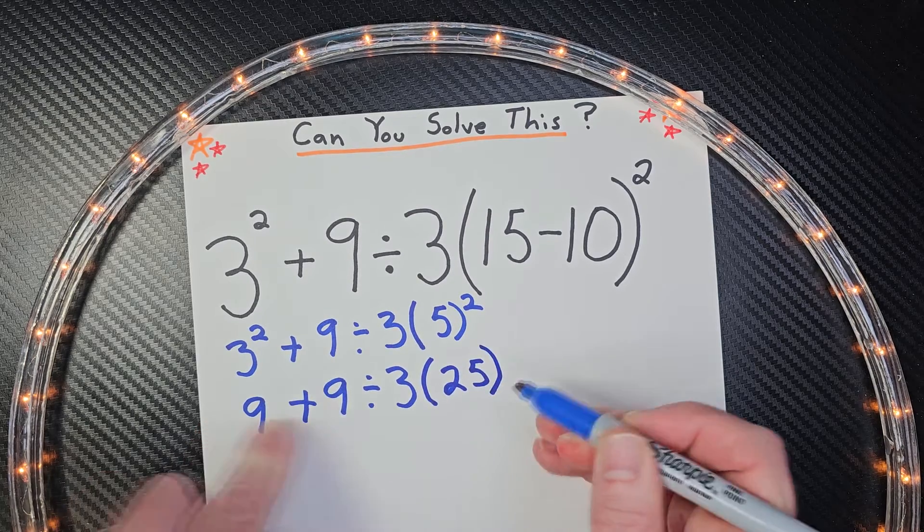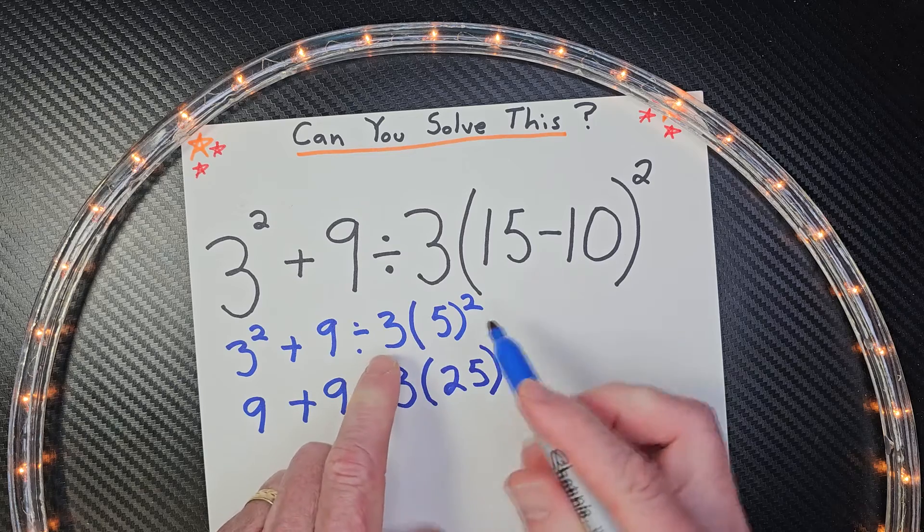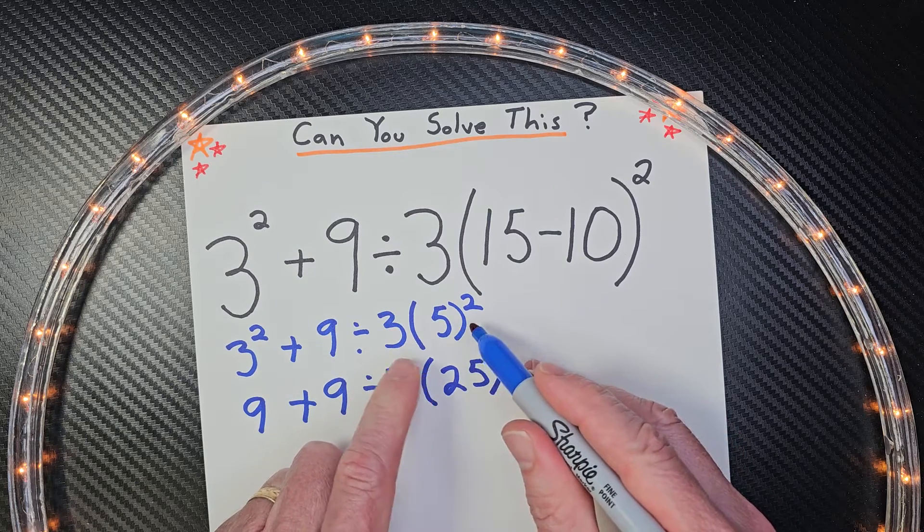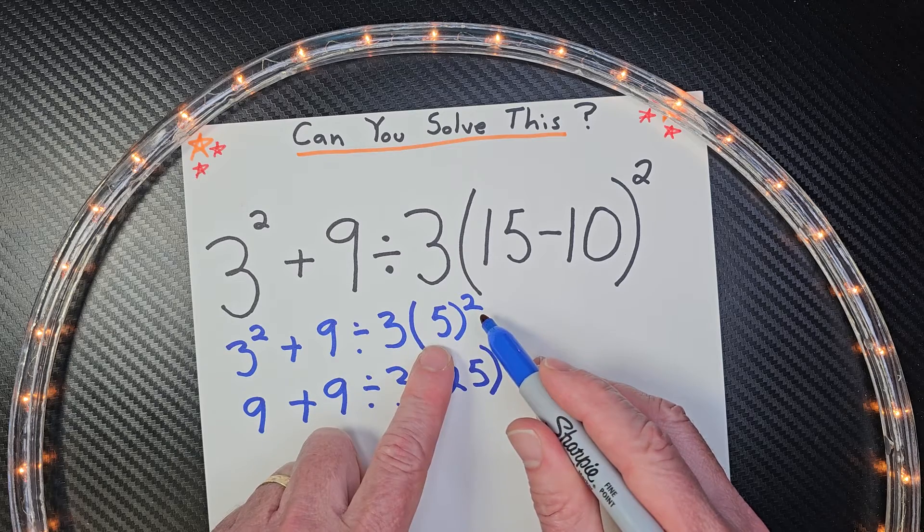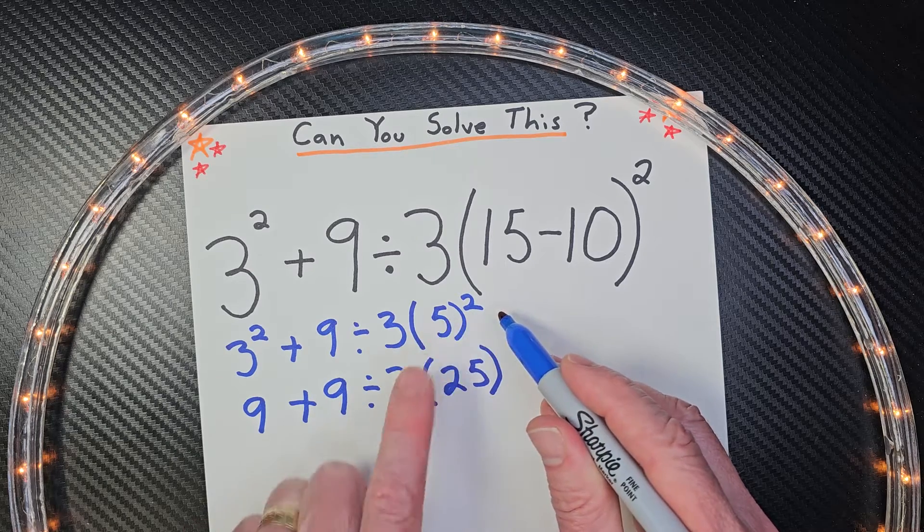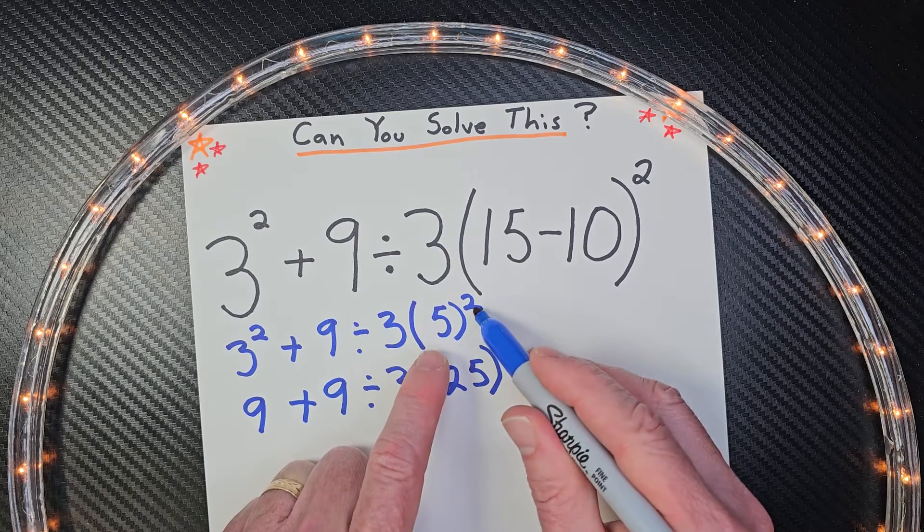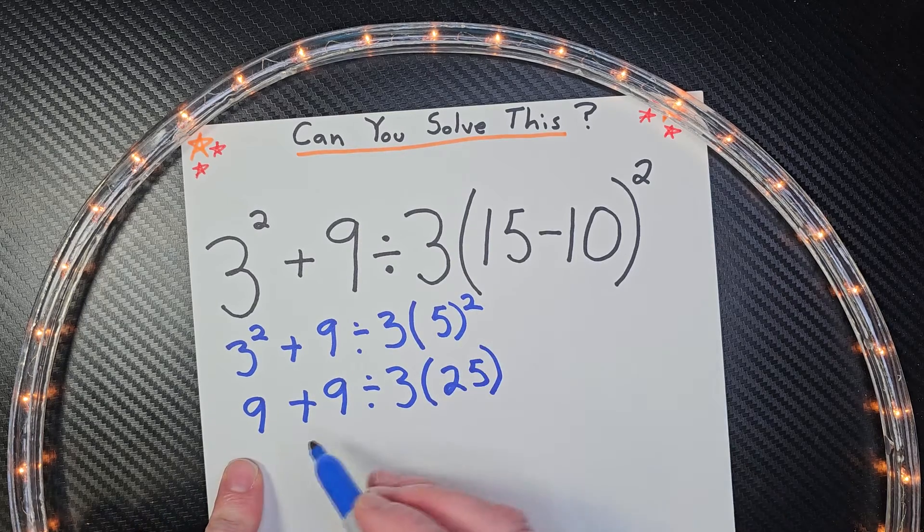Now I know there might be a little confusion right here, but we need to stay with the order of operation, and that is we do the exponents first. Don't do 3 times 5 would be 15 to the second power. No, it's 5 to the second power.